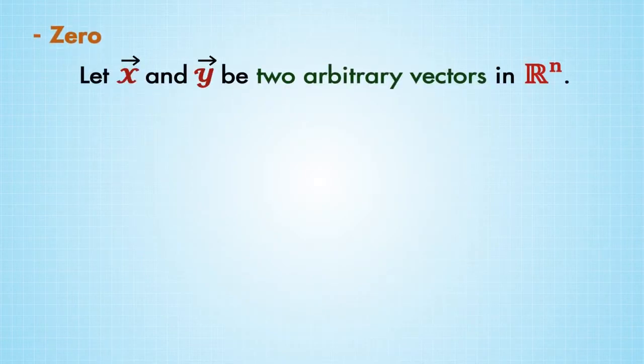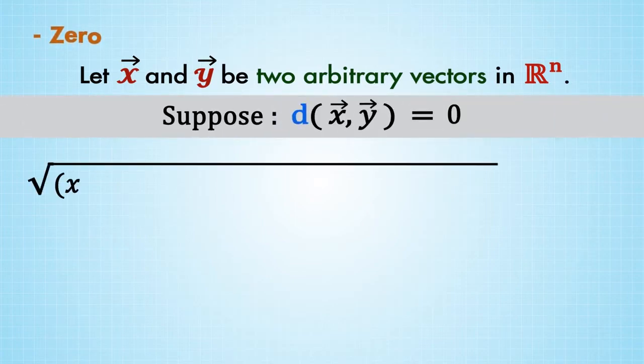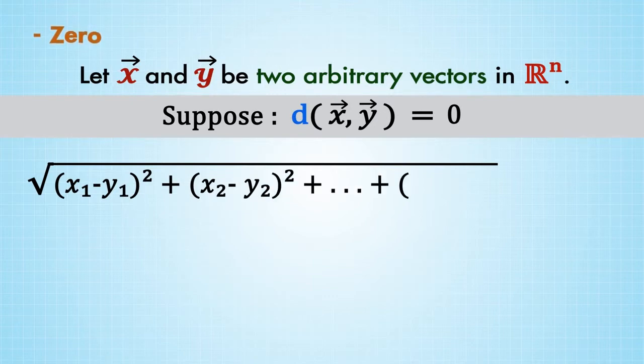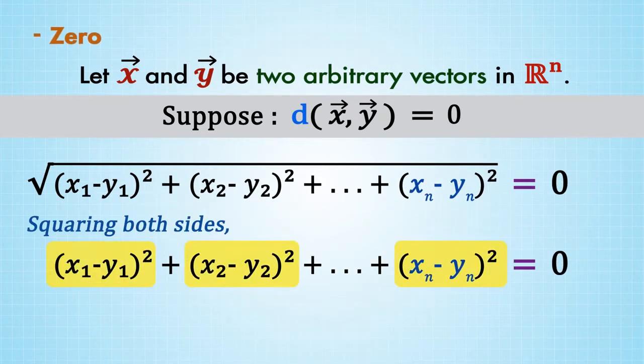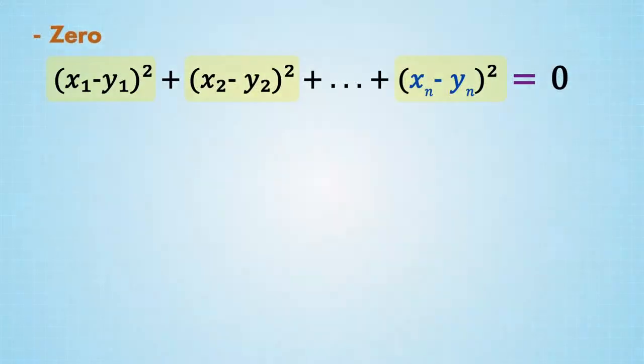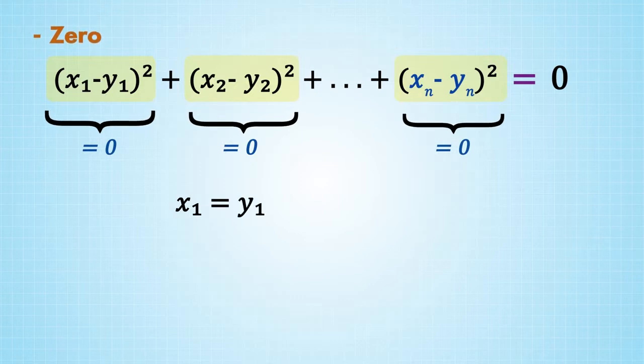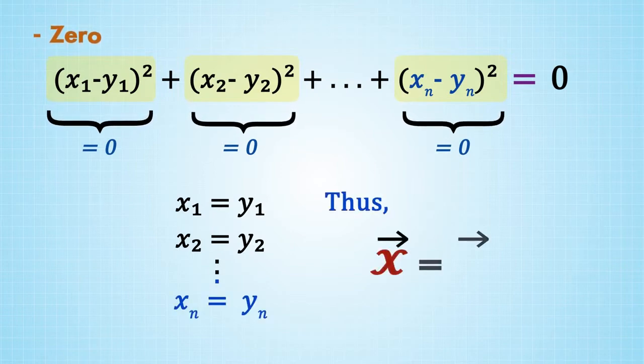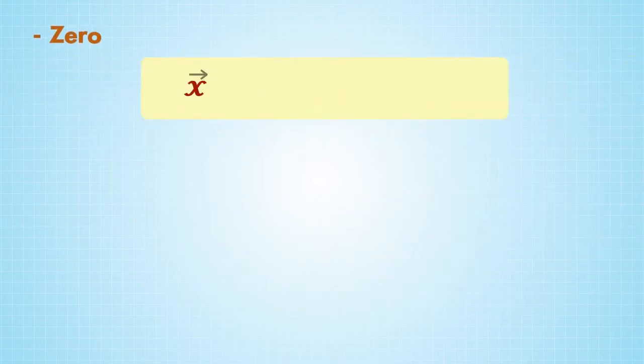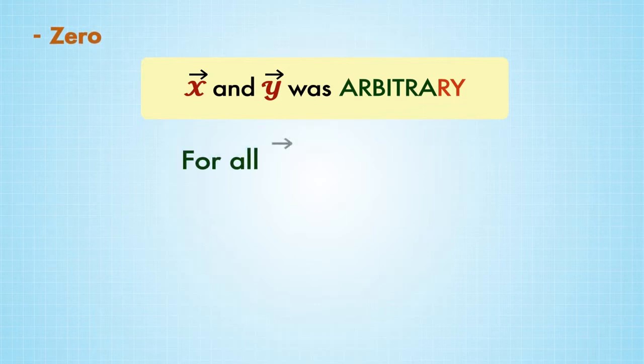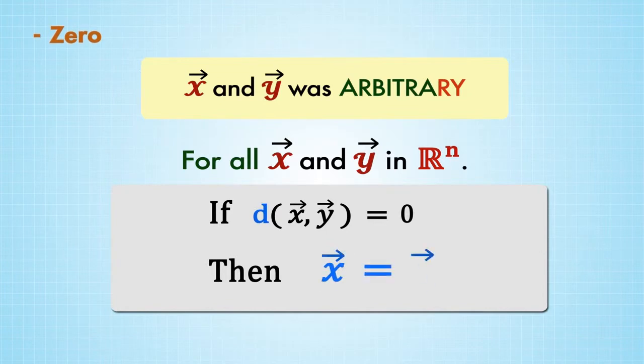Zero property. Let x and y be two arbitrary vectors in R^n. Suppose d(x,y) equals zero, i.e., the square root of (x1 minus y1) squared plus (x2 minus y2) squared up to (xn minus yn) squared equals zero. Squaring both sides, we get a sum of non-negative terms. But a sum of non-negative terms is zero when and only when each term is zero. But this implies x1 equals y1, x2 equals y2, up to xn equals yn. Thus x equals y. Since the choice of x and y was arbitrary, for all x and y in R^n, if d(x,y) equals zero, then x equals y.